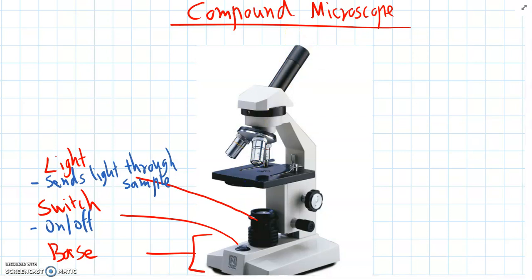So moving up from the base we have the back section here. And this section is called the frame. So it holds up the rest of the microscope.